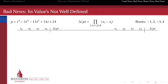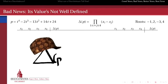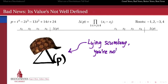First comes the bad news. The discriminant of a polynomial is not a well defined quantity. It looked like such a great thing, but then it turns out that it's not even single-valued. In other words, you and I might compute the discriminant for a polynomial and get different answers for the same polynomial.